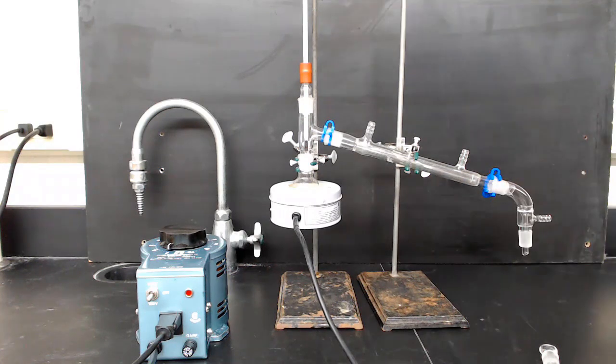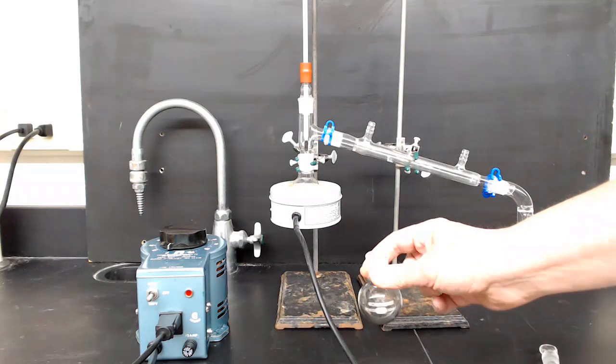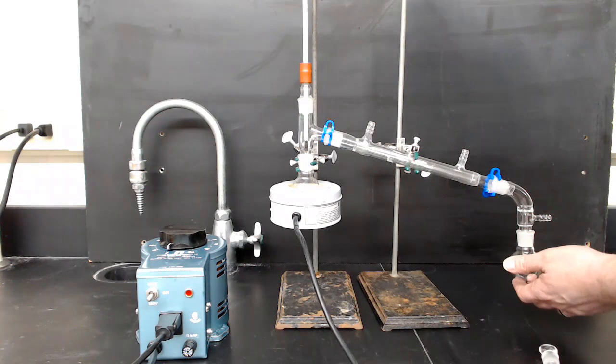Next, we'll need a flask to catch the distillate. This could be just about anything, but today we're going to be using a round-bottom flask. So attach that to the apparatus, and again secure with a Keck clamp.